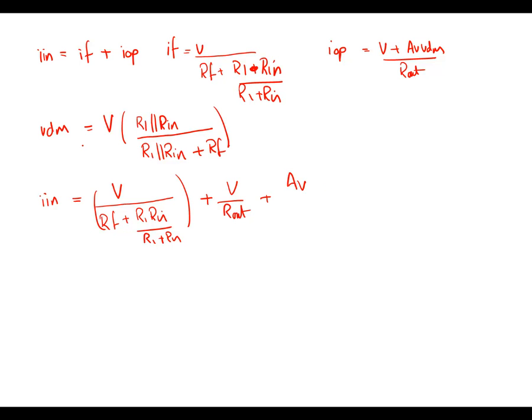And I've now got Vdm here. So this is V, R1 in parallel with Rn, all divided by R1 in parallel with Rn, plus Rf. So that is now my voltage source here, Av Vdm, and of course all of that actually needs dividing by my Rout. So if I extend that and I stick Rout there, we've got our terms.